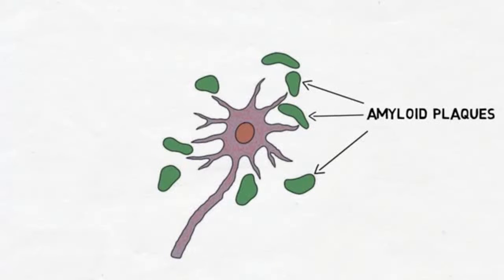Another protein called tau protein, which is normally found inside neurons and involved in maintaining neural structure, is also found in a misfolded state in Alzheimer's. It accumulates inside neurons in bundles called neurofibrillary tangles.